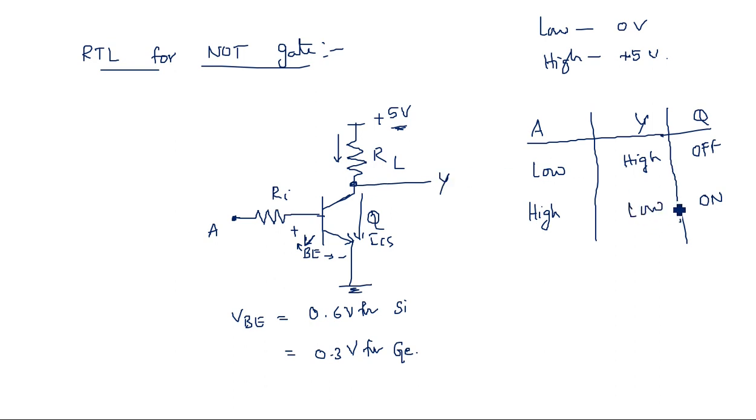The output is nothing but low level, nothing but low voltage. This is the operation and explanation of the NOT gate. The NOT gate can be realized using a transistor alone.